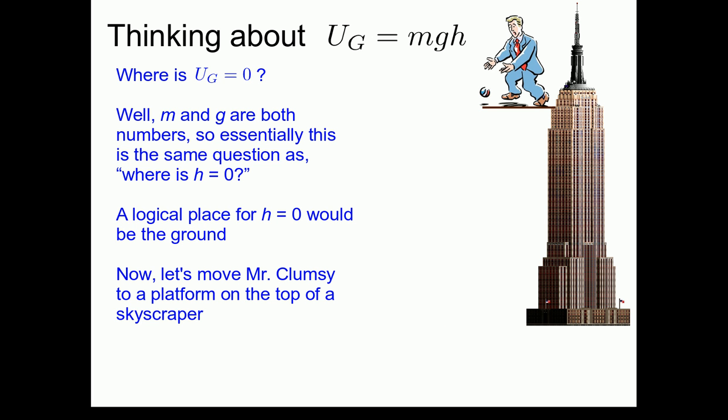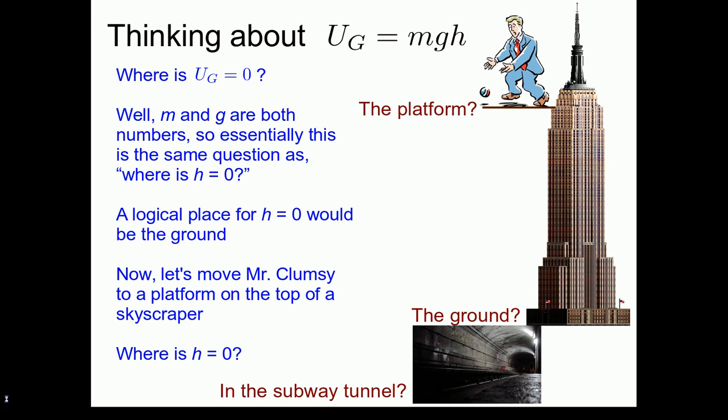Now, let's move Mr. Clumsy to a platform on the top of a skyscraper. Now where is h equals zero? This is perhaps a little bit trickier question. Do we define h equals zero to be at the platform? Or do we define it to be at the ground? Or do we even define it to be in the subway tunnel underneath the skyscraper?